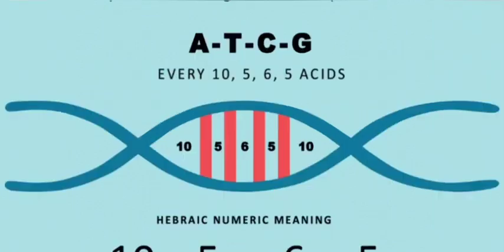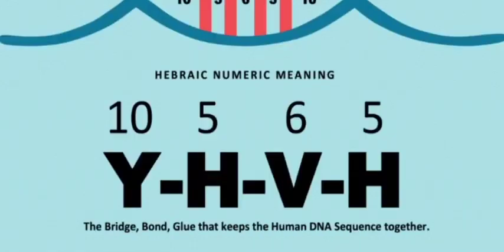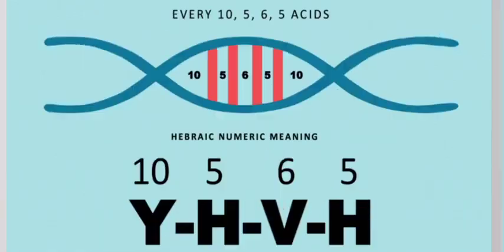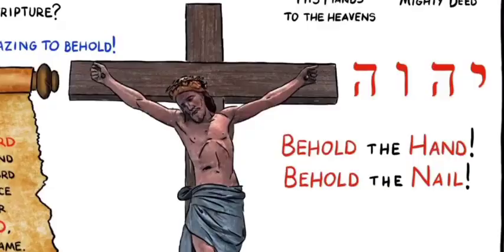And that is also comparable in the same number pattern as Yahweh, 10-5-6-5, the name of God. And what is the name of God, and what does it mean? Well, when you take the translation of these words, it means 'Behold the hand, behold the nail.'